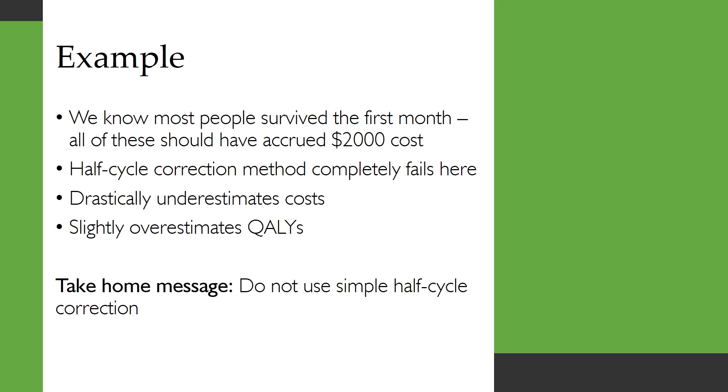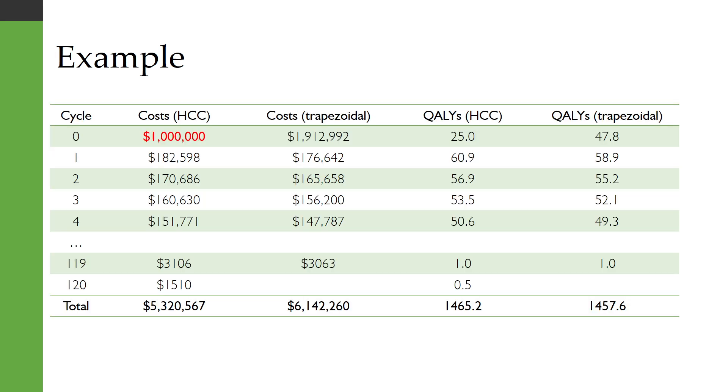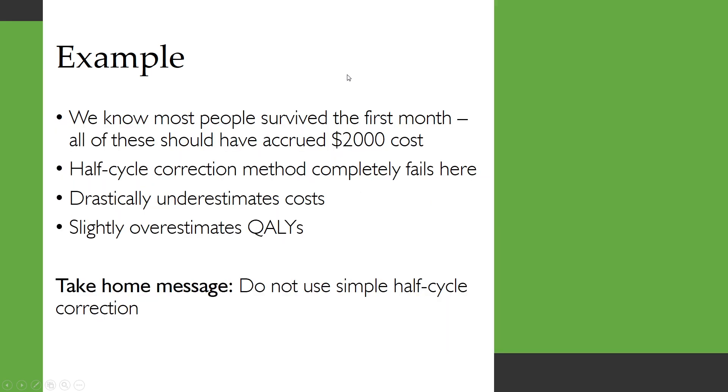But we know that most people survived the first month and all of them should have accrued the $2000 cost, so a thousand people, $2000, we should be much closer to the two million mark than the one million mark and that doesn't get picked up anywhere later and so we see overall a very significant underestimation of the costs. That's a complete failure of the half cycle correction method. It's drastically underestimated the costs and it's also overestimated the QALYs. So my take home message is just don't use that simple half cycle correction. It's not worth it.